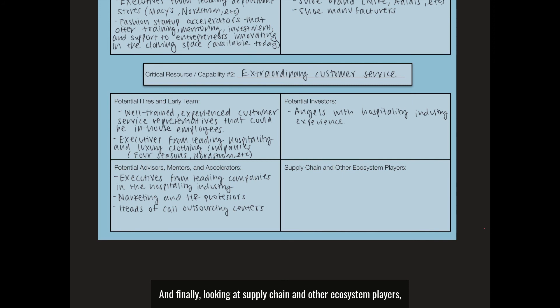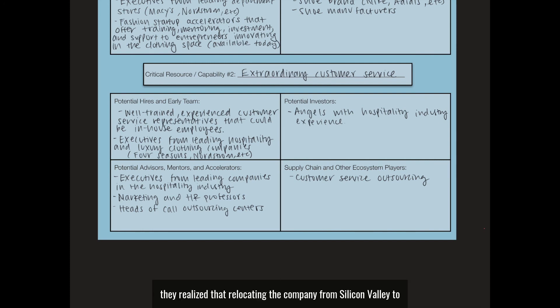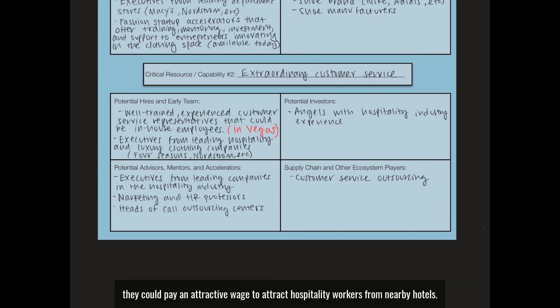Looking at supply chain and other ecosystem players, customer service outsourcing remains an option despite being somewhat unideal for the extraordinary service Zappos is trying to provide. When Zappos.com's early team thought through this process in the early 2000s, they realized that relocating the company from Silicon Valley to Las Vegas would enable access to this capability — in Vegas, they could pay an attractive wage to attract hospitality workers from nearby hotels. That concludes section three of the exercise.